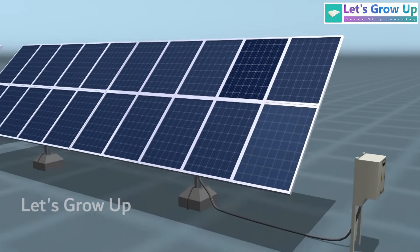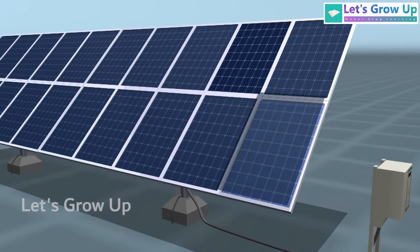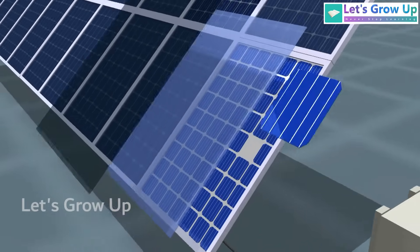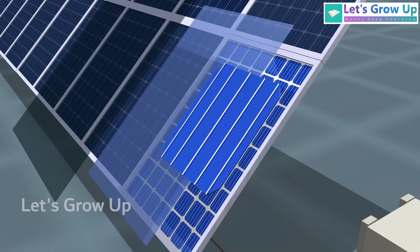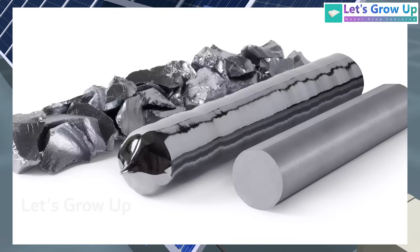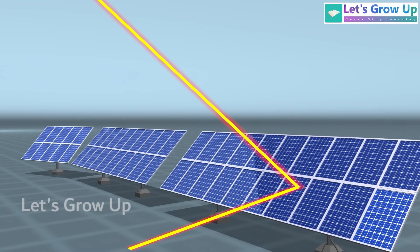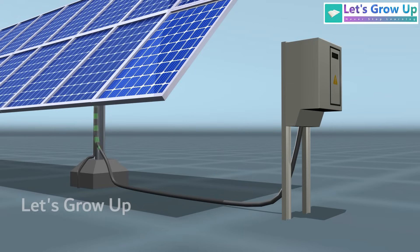A solar panel consists of multiple layers designed to protect the panel, with solar cells being the primary components. Solar cells are composed of semiconductor materials such as silicon. When sunlight penetrates the solar panel, it generates electricity, typically in the form of direct current (DC).